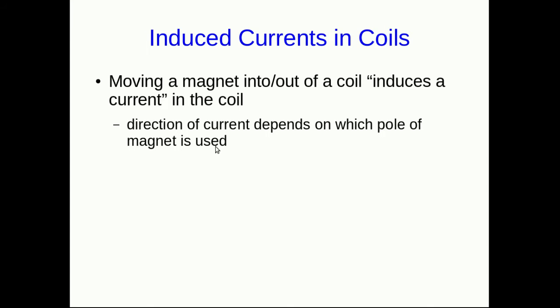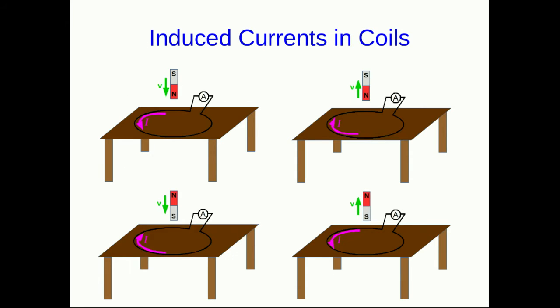We've just seen not only that moving a magnet can induce a current in a coil but that the direction of the current depends on which pole of the magnet is used and it also depends on whether the pole is moving in or out of the coil and we want to be able to explain all of these observations. And I'll just summarize that in this picture where I show the idea of moving a north pole of a magnet in towards a coil or out or the south pole in or out.